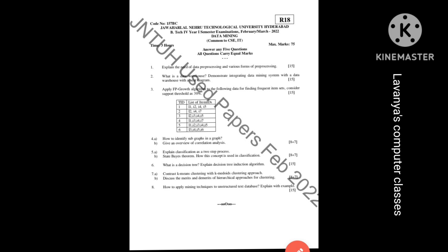The seventh question: A bit is contrast K-means clustering with K-medoids clustering approach, and B bit is discuss the merits and demerits of hierarchical approaches for clustering. The last question is how to apply mining techniques to an unstructured text database.